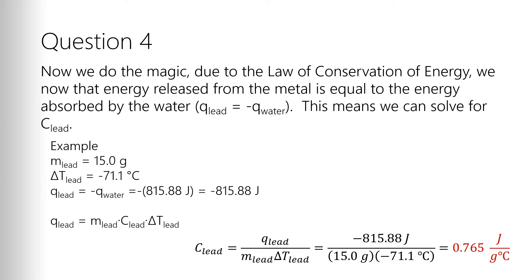You get, in this case with our data, a positive value of 0.765 joules per gram degree Celsius. Now, obviously, you can tell this is made up data because that's nowhere near the actual predicted value that you guys got in your work when you're doing your pre-lab.